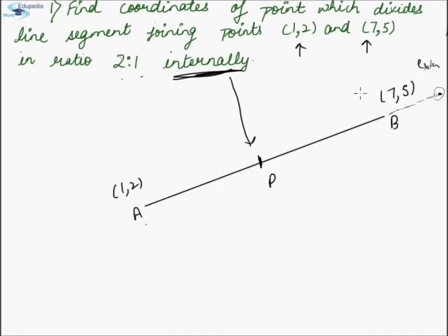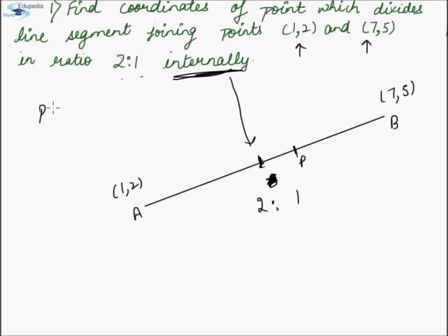In our case, we are given internal division. We are given that the ratio in which P divides AB is 2:1. So in actual, this point will be somewhere closer to B, meaning AP will be slightly larger than PB.